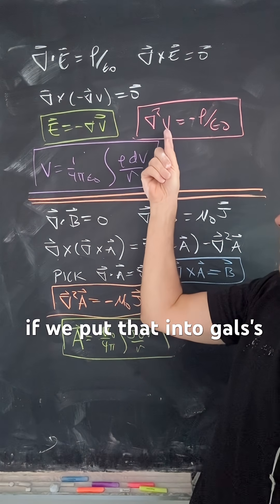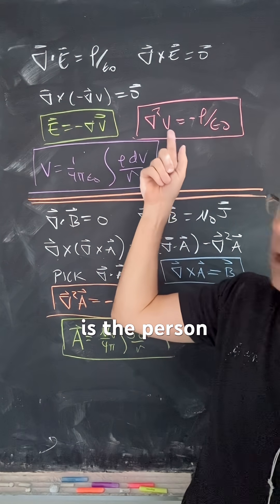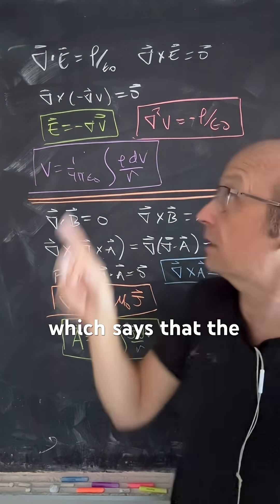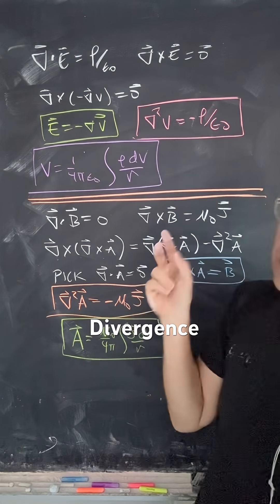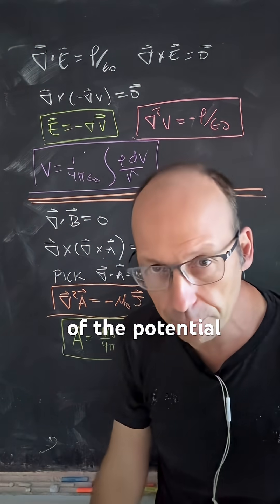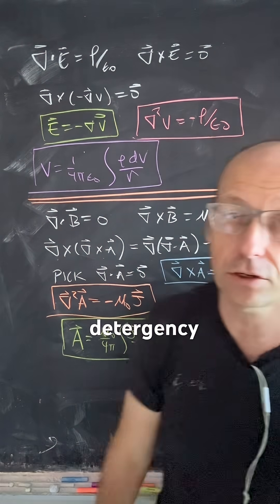And if we put that into Gauss's law, we get this. This is the Poisson equation, which says that the Laplacian of the potential is the negative of the charge density.